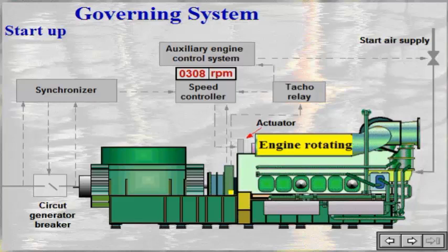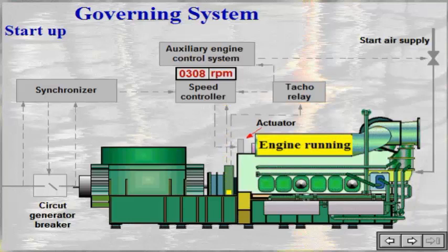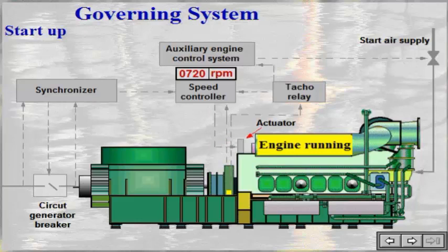When the engine is running, the starting air is shut off. The speed controller receives a speed signal from a magnetic pickup on the flywheel cover. While the engine speed is below normal running speed, it sends signals to the actuator fitted on the flywheel end of the engine to increase engine speed.